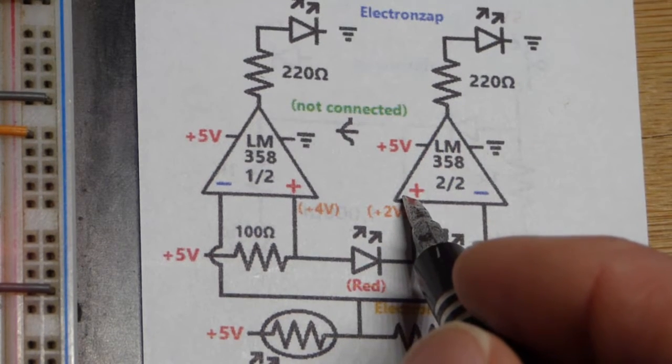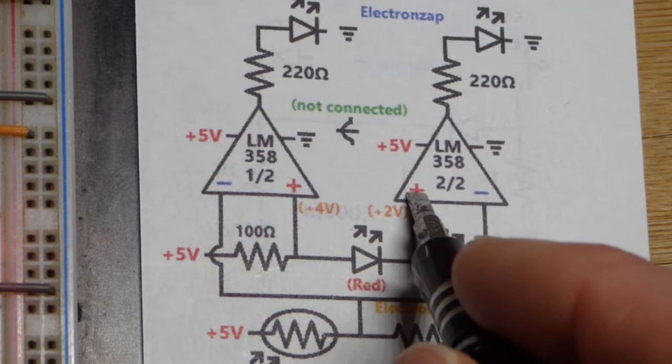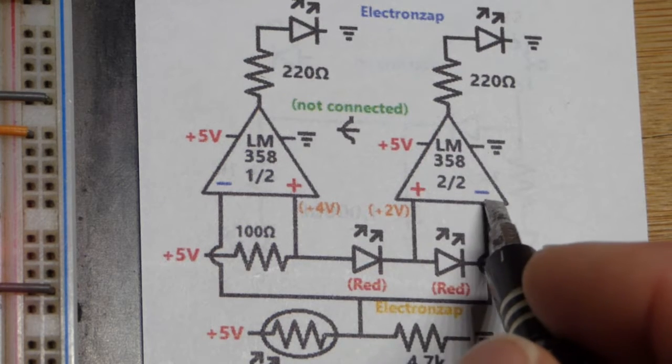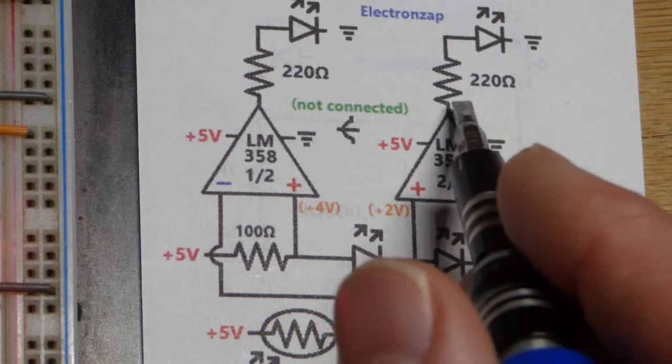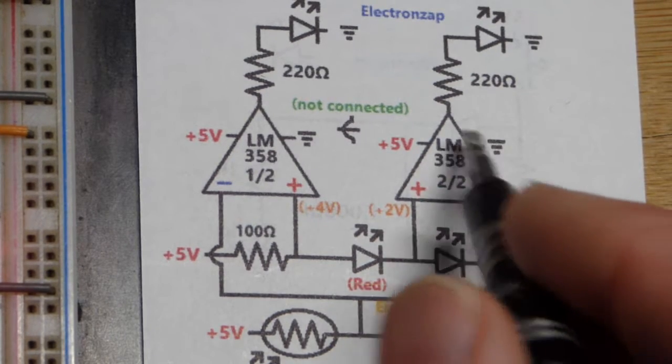The output always wants to be more like what the non-inverting input is in relationship to the inverting input. When it's higher you got a high output, and when the voltage is lower than the inverting input then the output is low.